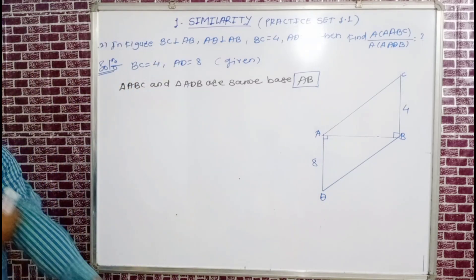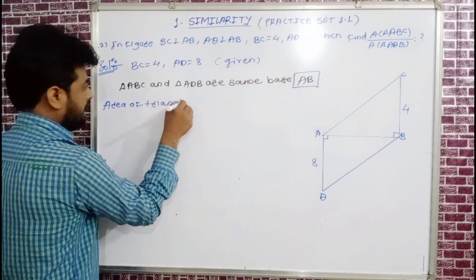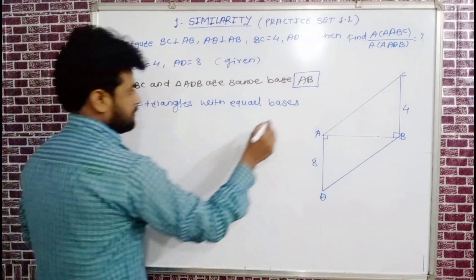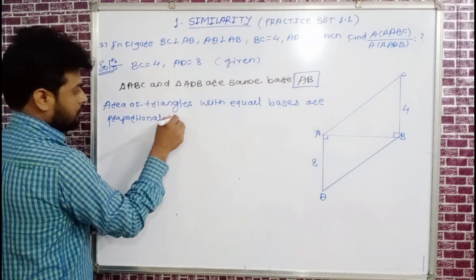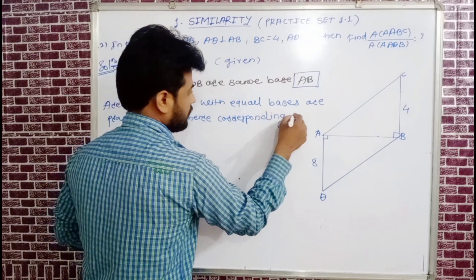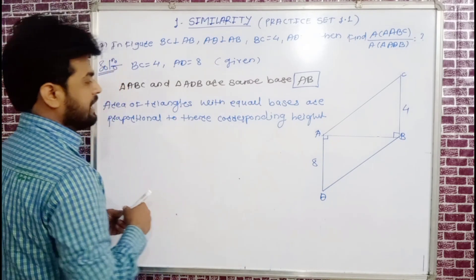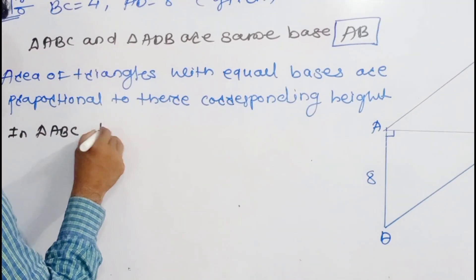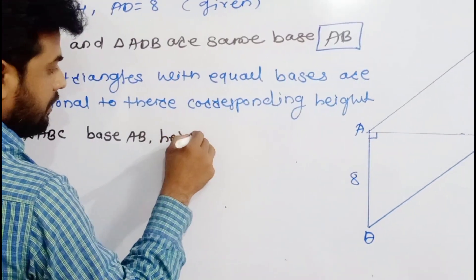Triangles with equal bases have areas proportional to their corresponding heights. In triangle ABC, the base is AB and the height is BC. In triangle ADB, the base is also AB and the height is AD.